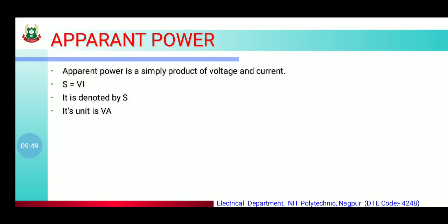Next is apparent power. Apparent power is simply the product of voltage and current: S = VI. It is denoted by S and its unit is VA (Volt-Ampere) — voltage for V and ampere for A, that is why its unit is VA.